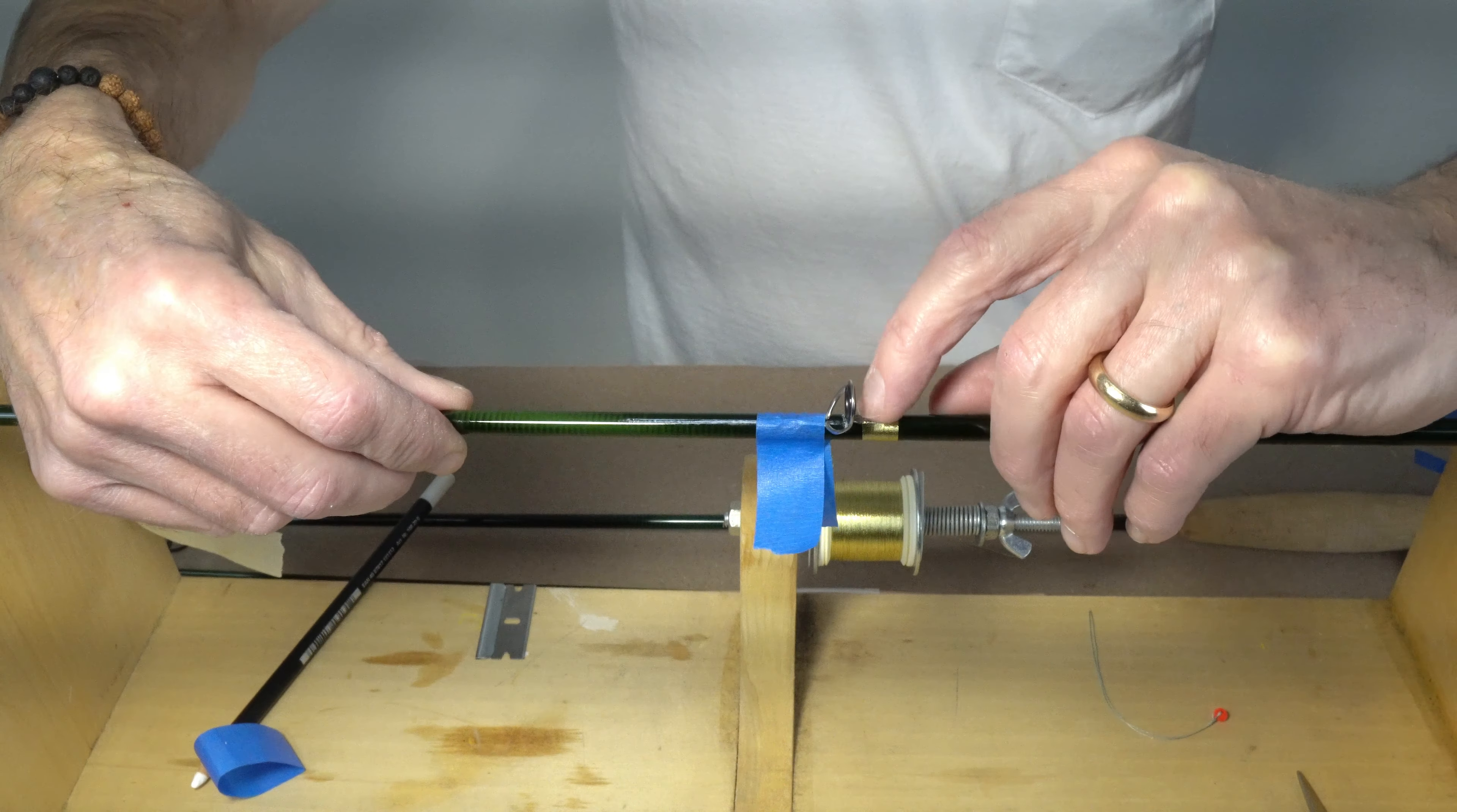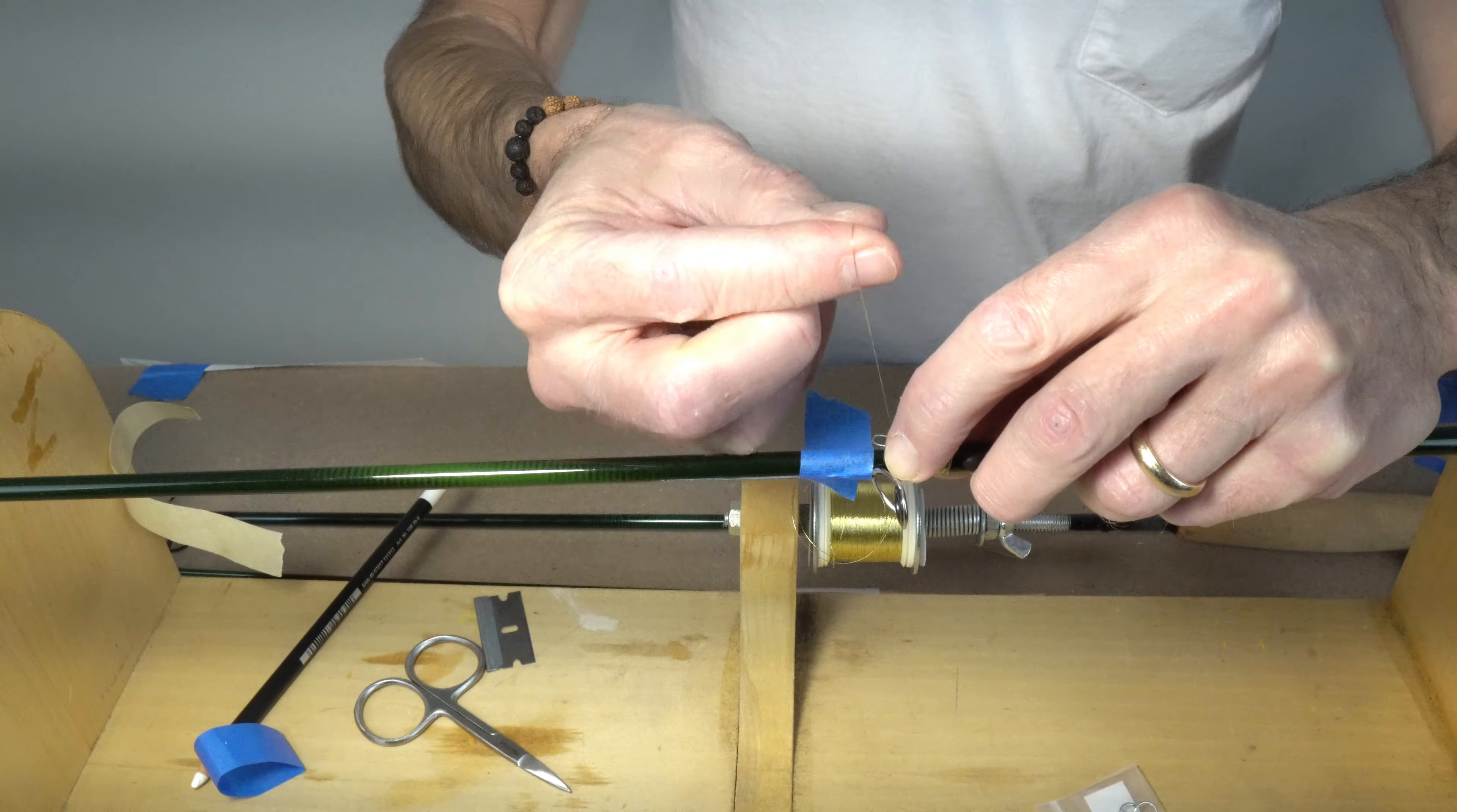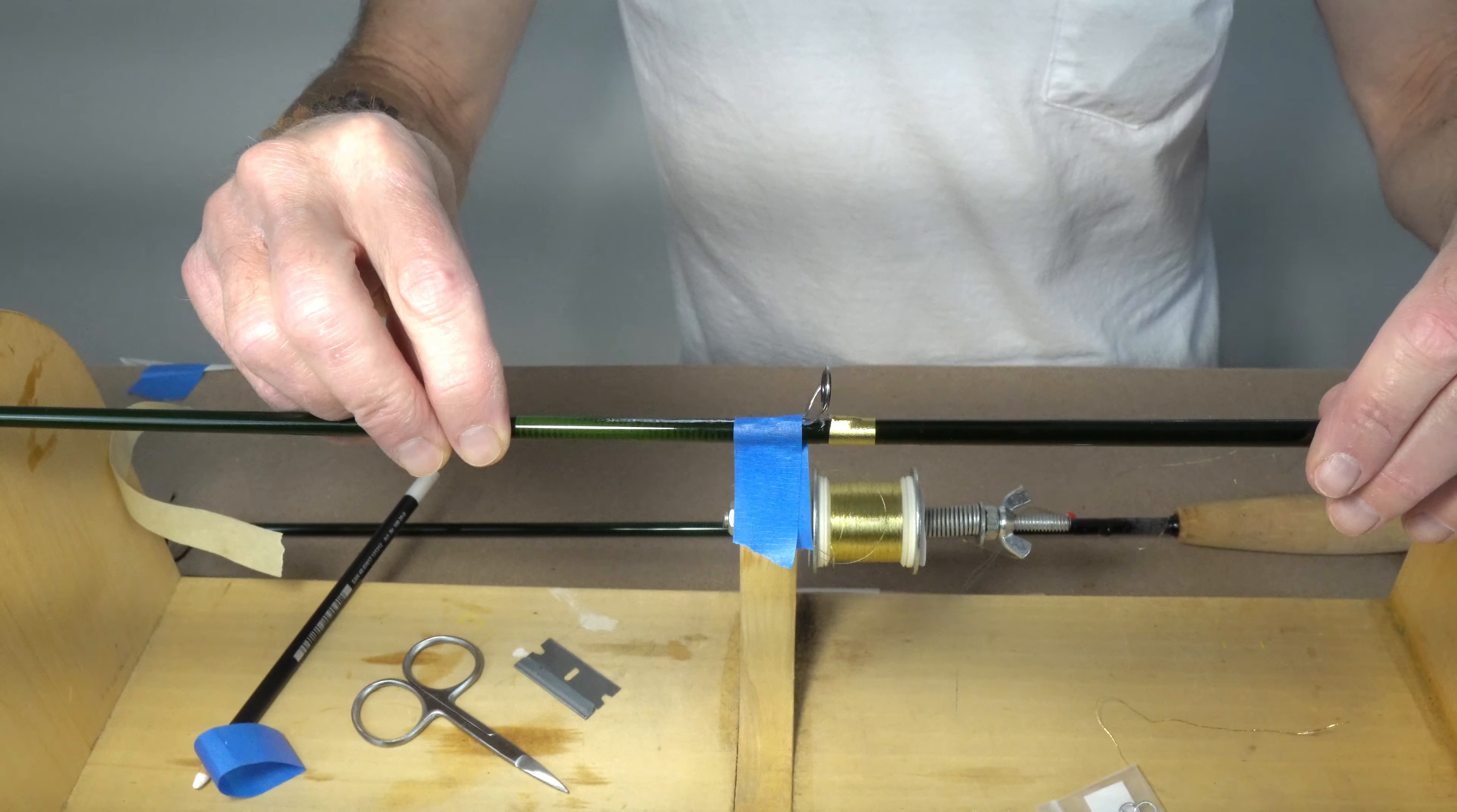When I got about a sixteenth of an inch or so yet to go, grab my puller, drop that in, keep wrapping. Pull that off, cut through my loop, holding tension. Pull that through and then cut it nice and close. There we have it, that's our guide wrap. I hope you can see that a lot better than what I had before with that black on green.